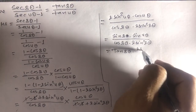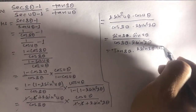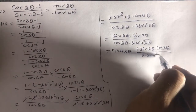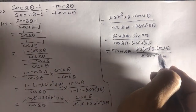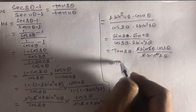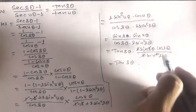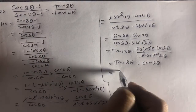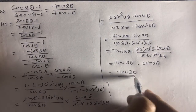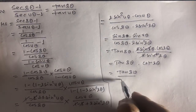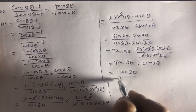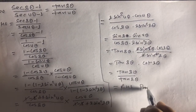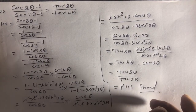Now sin4θ is written as 2sin2θ·cos2θ, divided by 2sin²2θ. The 2 cancels and one sin2θ cancels, leaving cos2θ/sin2θ, which is cot2θ. So we have tan8θ multiplied by cot2θ, and since cot equals 1/tan, this gives tan8θ divided by tan4θ, which equals RHS. Thank you for watching.